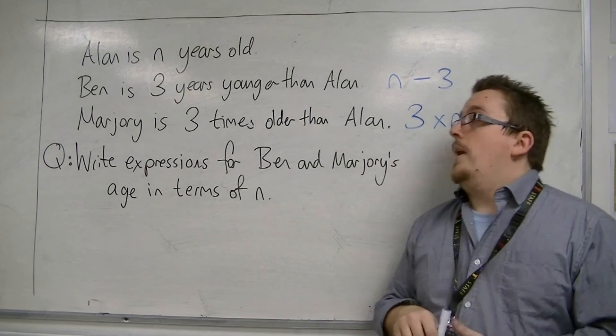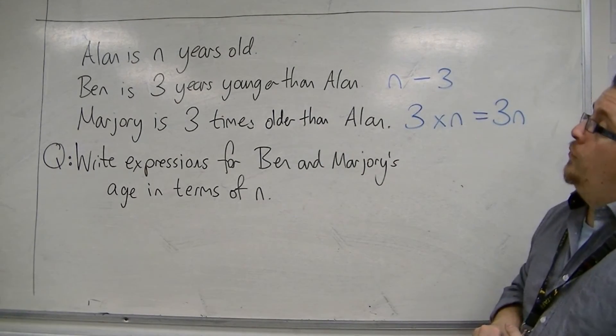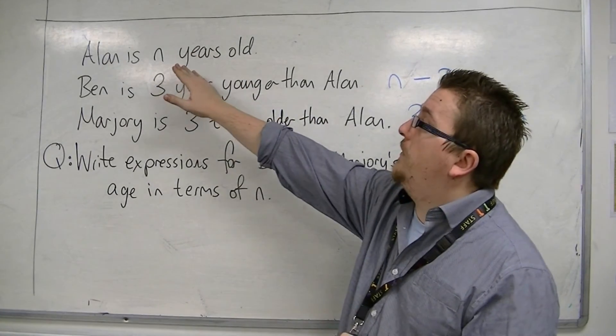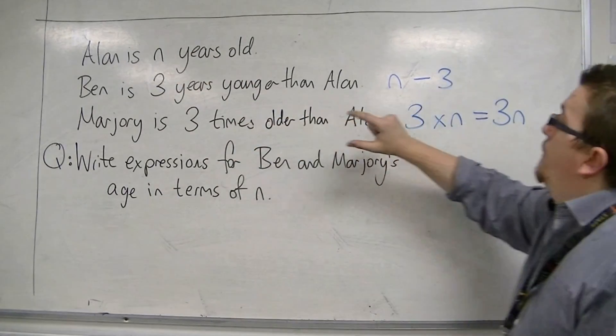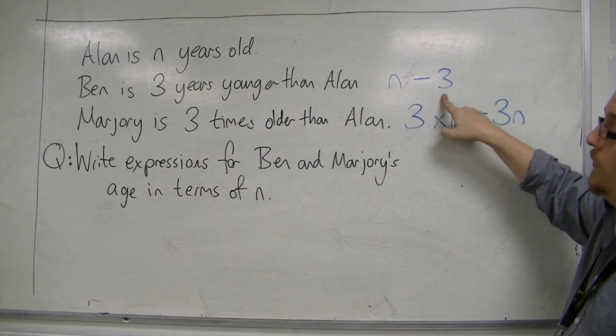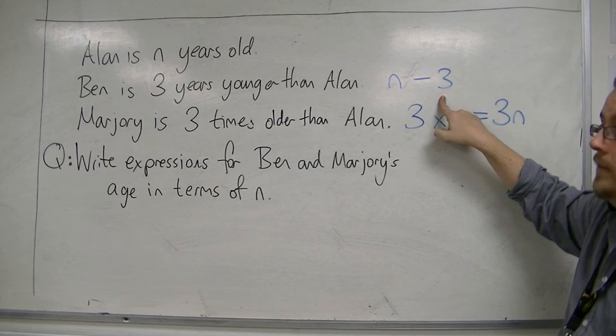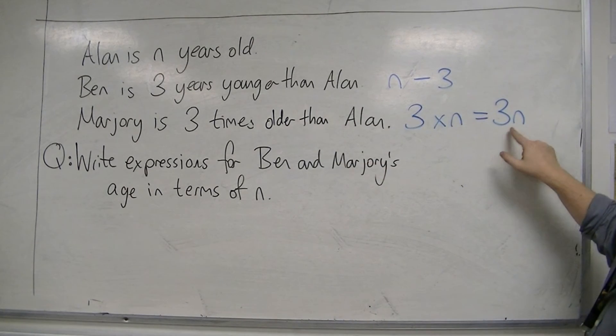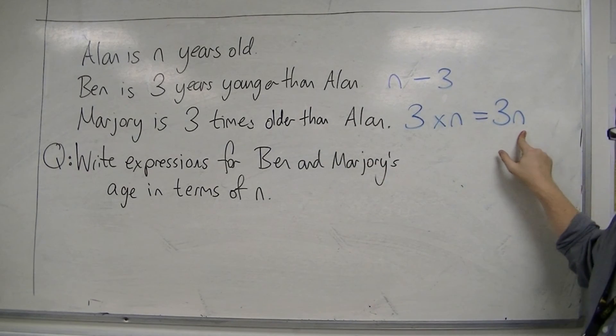So if Alan was 20 years old, then Ben would be 20 minus 3, so 17. And Marjorie would be 3 lots of 20, so 60.